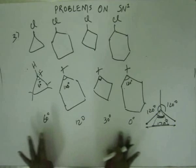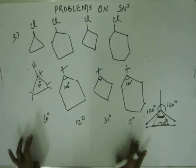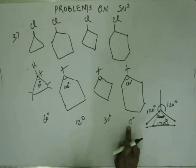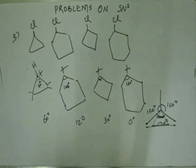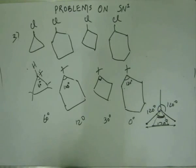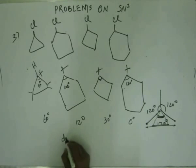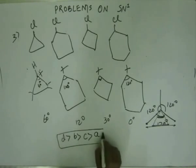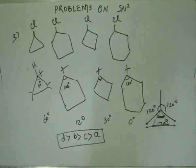So based upon these strains we decide which is most stable. Considering there is 0 degrees strain in the six-membered ring, this is most stable. Followed by 12 degrees strain (five-membered ring), followed by 30 degrees strain (four-membered ring), followed by 60 degrees strain (three-membered ring). So based upon the strain, the answer would be: D is the most stable, followed by B, followed by C, followed by A. This will be the answer considering the angle strain on these rings.